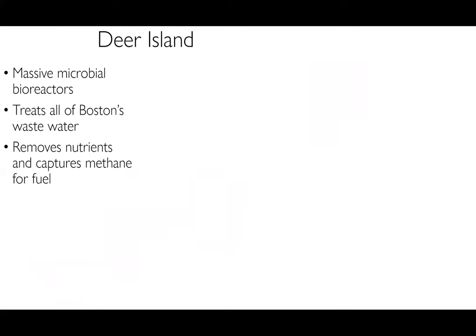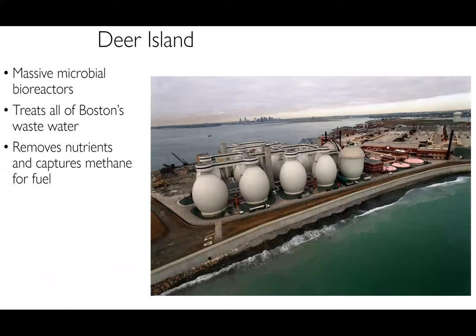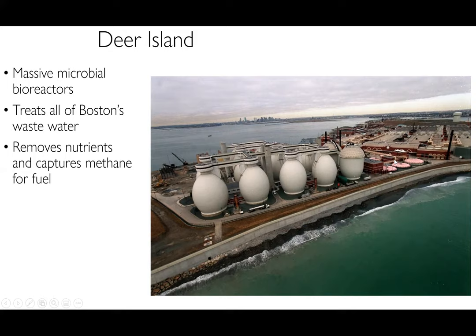Here in Boston, we have Deer Island — you probably don't think about it very much, but if you go near the coast you'll see these giant eggs off the coast of Massachusetts. These are massive microbial bioreactors that treat all of Boston's wastewater by removing nutrients and capturing the methane, which is then used as fuel to power the whole wastewater treatment plant. These eggs are about 80 to 90 feet tall — Deer Island is huge. They don't pump the wastewater directly into Boston Harbor; they pump it about six or seven miles off the coast through a large pipe.